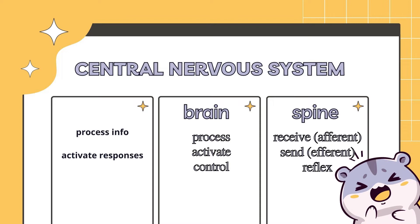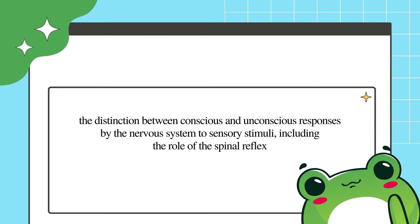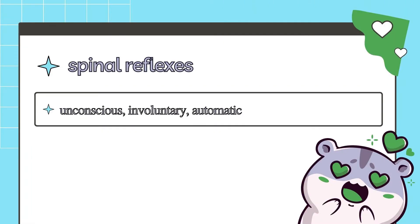In summary, the spinal cord is a pathway for messages to and from the brain. The next stop point is the distinction between conscious and unconscious responses by the nervous system to sensory stimuli, including the role of the spinal reflex. The spinal cord can also initiate simple motor reactions, known as reflexes, that occur independently of the brain. These are unconscious, involuntary and automatic responses, because the information is only processed in the brain after the reflex occurs.